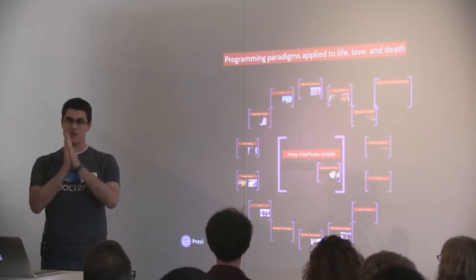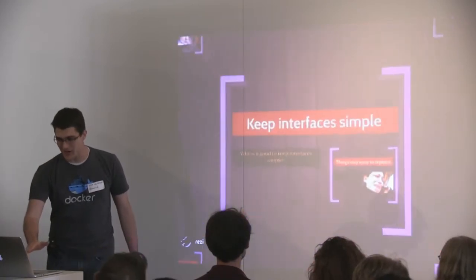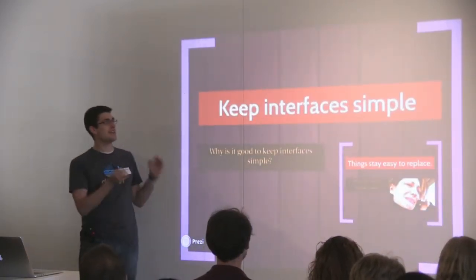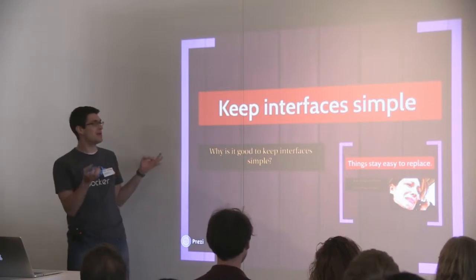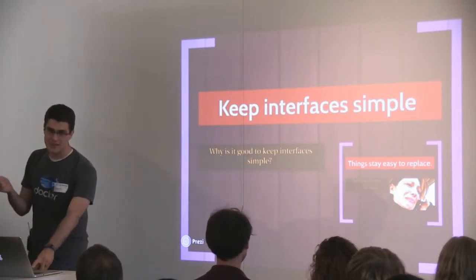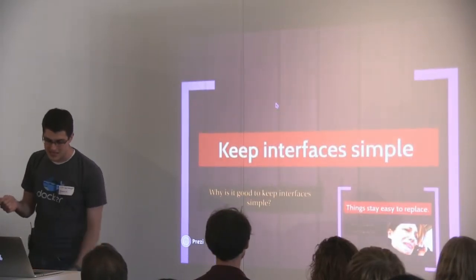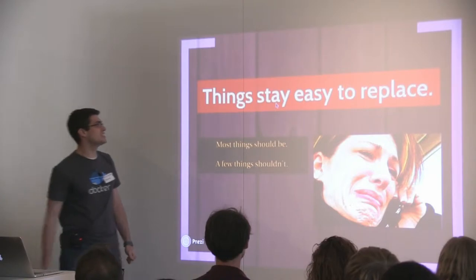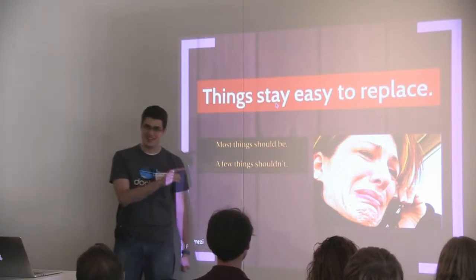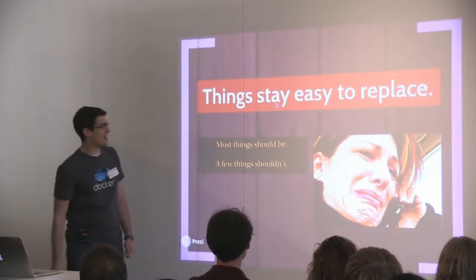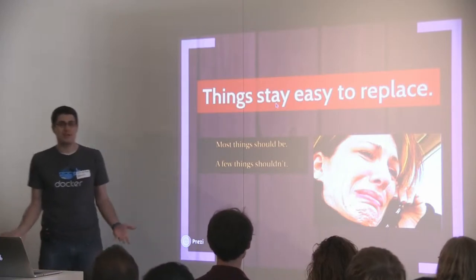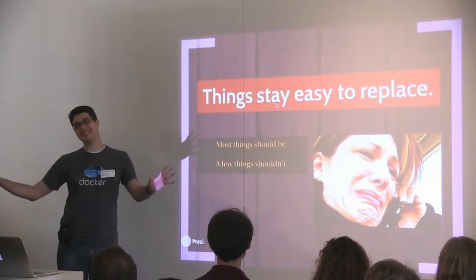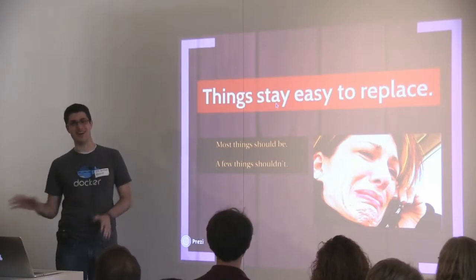Let's get started with one good practice: keep your interfaces simple. How does this apply to our lives? Why do we keep interfaces simple in the first place? The idea is that you code to that API because the API isn't going to change on you. Things stay easy to replace. Most things actually should be easy to replace — most of you people, no offense, are replaceable in my life at the moment.